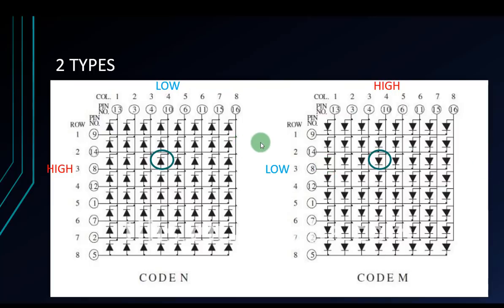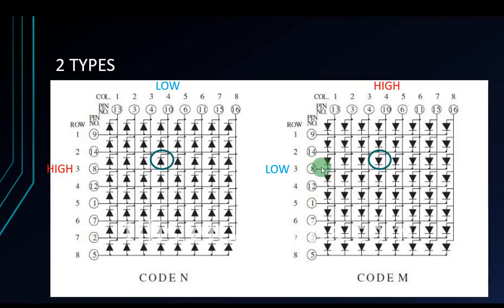In Arduino, remember that if you want to set an output on pins, you have to use the pinMode function in the setup function. When I set pinMode, the pins will be at high level by default. So if I set row 3 low, all of the LEDs in that row will turn on — so please don't be surprised when you see that.